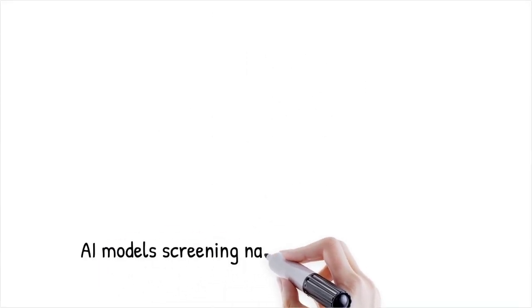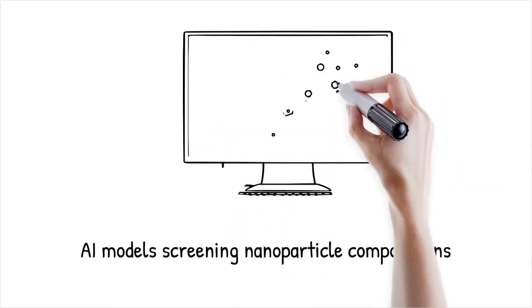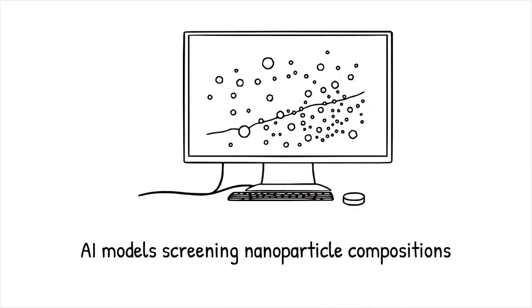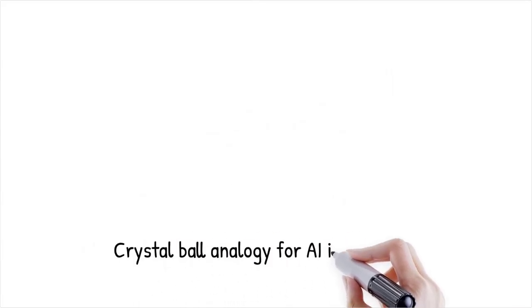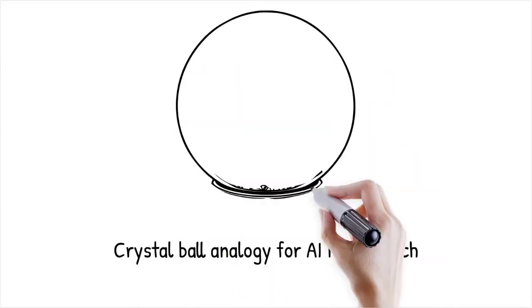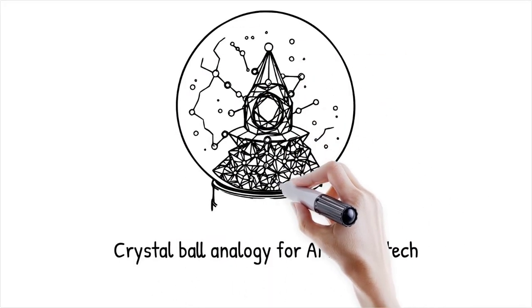Predictive AI models are now screening millions of nanoparticle compositions to identify candidates for high-efficiency solar cells. It's like using a crystal ball that not only shows the future, but reveals all the hidden layers beneath the present world.